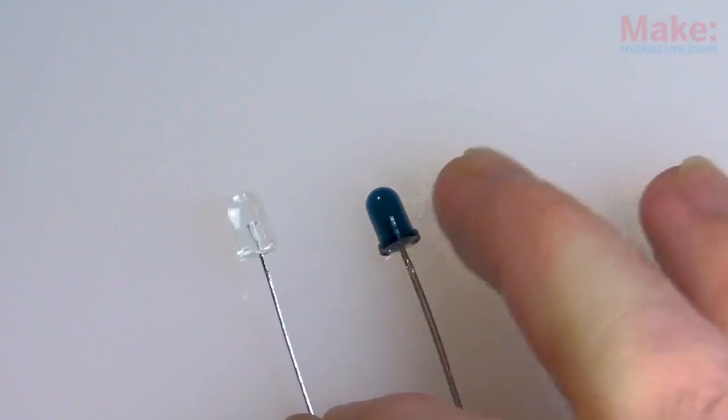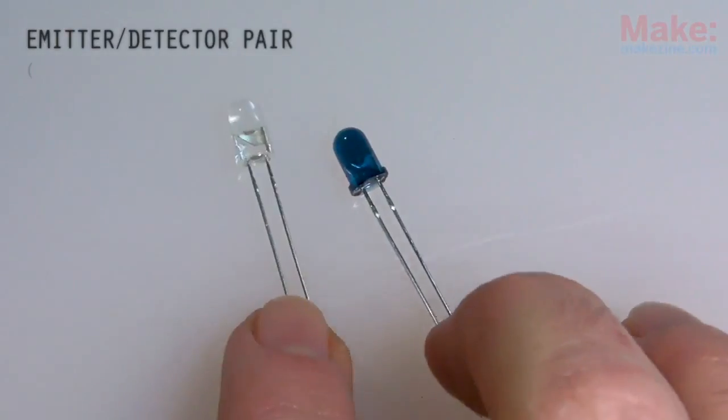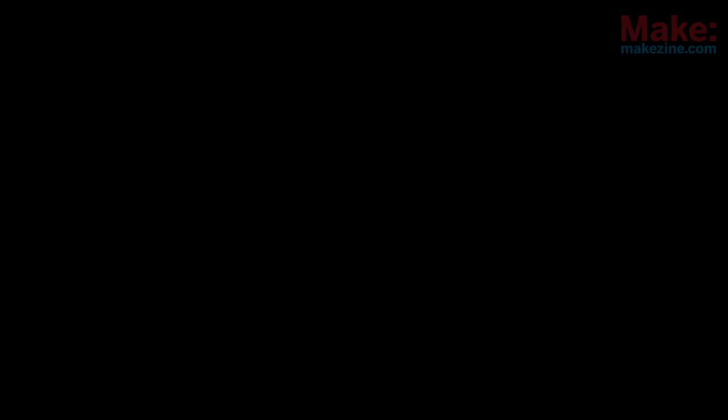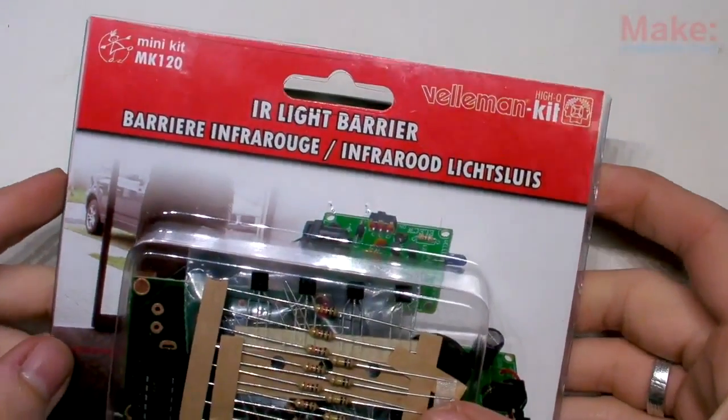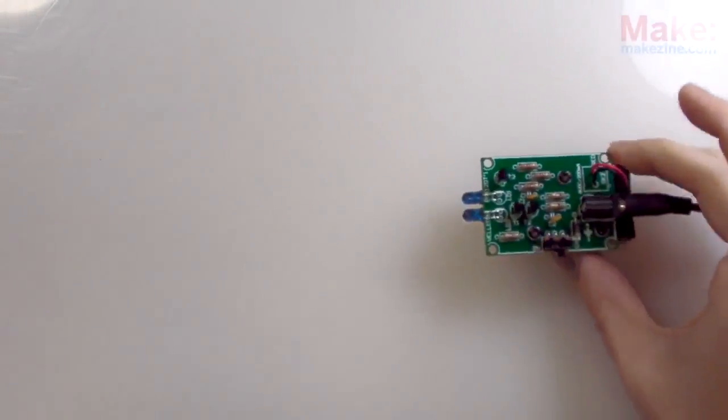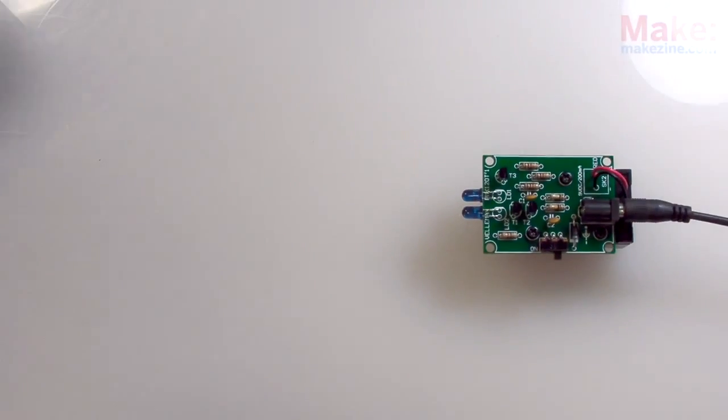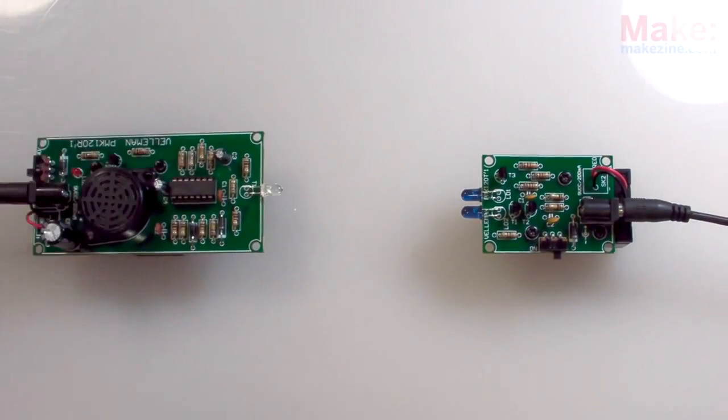When used together, IR emitters and detectors can pull off some pretty interesting tricks. For example, this simple IR light barrier kit consists of a transmitter with IR LEDs and a receiver with an IR photo transistor.